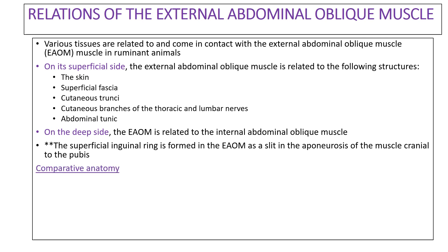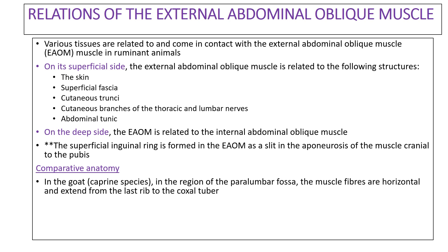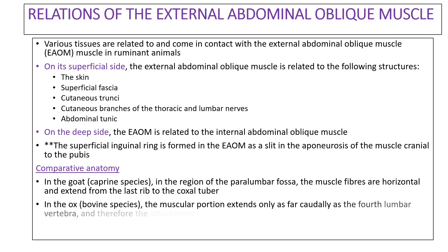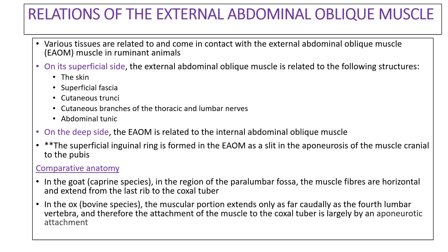In terms of comparative anatomy, in the goat or caprine species, in the region of the paralumbar fossa, the muscle fibers are horizontal in direction and they extend from the last rib to the coxal tuber. While in the ox or bovine species, the muscular portion extends only as far caudally as the fourth lumbar vertebra, and therefore the attachment of the muscle to the coxal tuber is largely by an aponeurotic attachment.